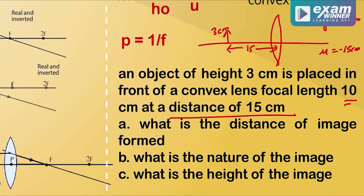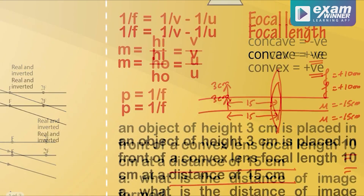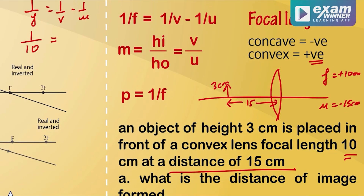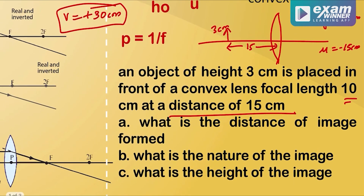Using the lens equation 1 by f equals 1 by v minus 1 by u, and substituting u equals minus 15 cm and f equals 10 cm, we solve for v. The answer comes out to be v equals plus 30 cm. That is the image distance — the first answer.